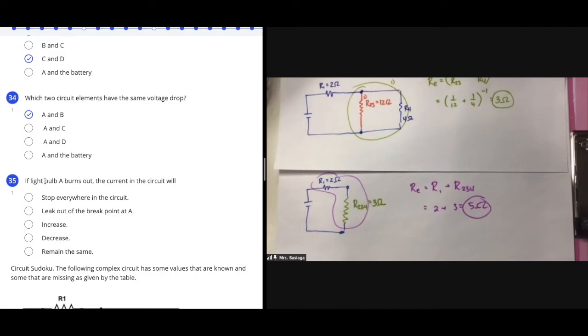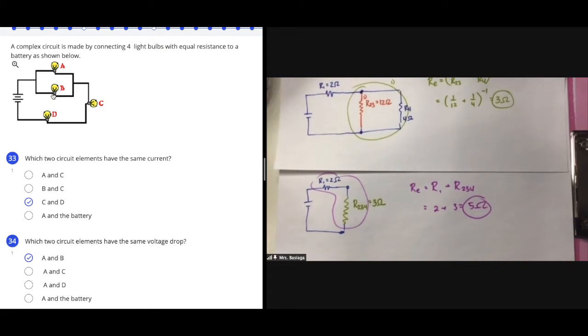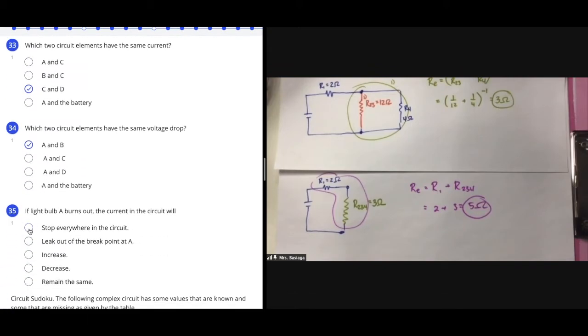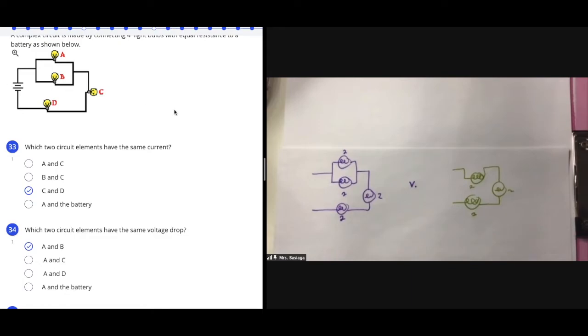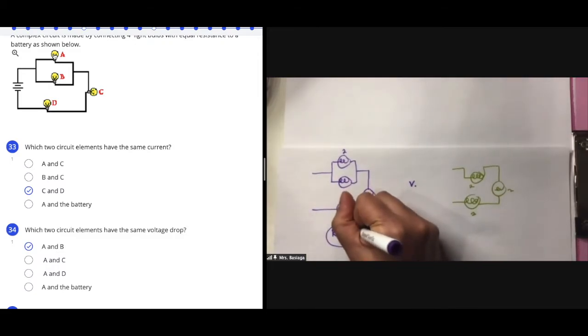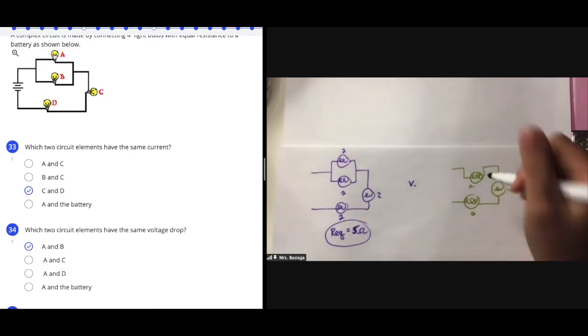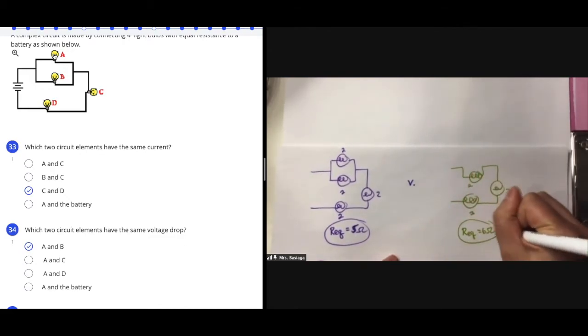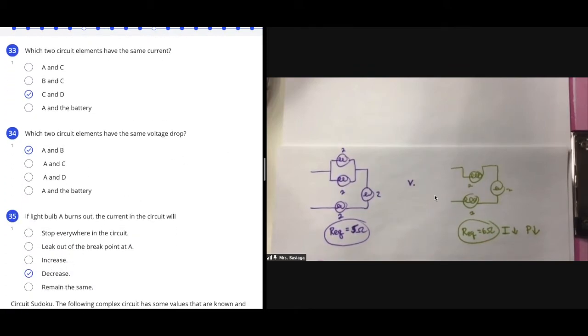For number 35, if light bulb A burns out, path B is still open, so electrons continue to flow. A will turn off, but B, C, and D will remain on. The current in the circuit will actually decrease. If you assign a resistance of 2 ohms to each bulb, with A present the equivalent resistance is 5 ohms; remove A and it rises to 6 ohms. So the current decreases, power decreases, and the remaining bulbs get dimmer.